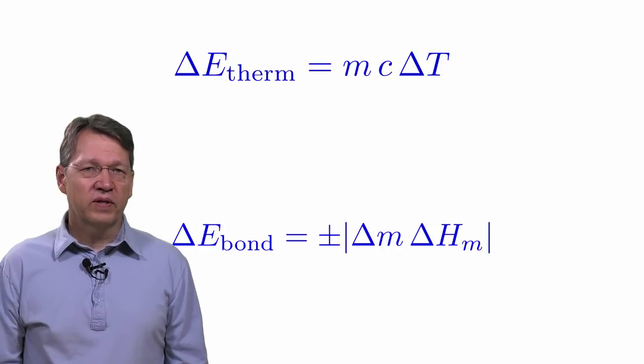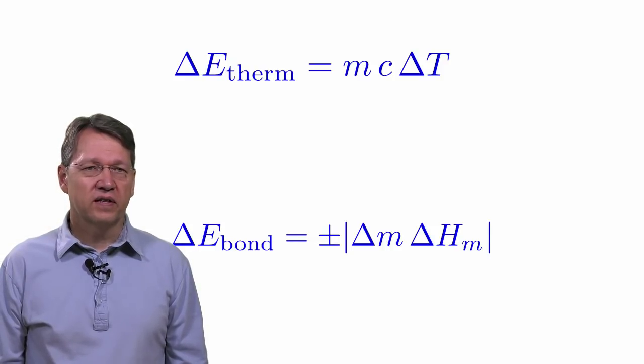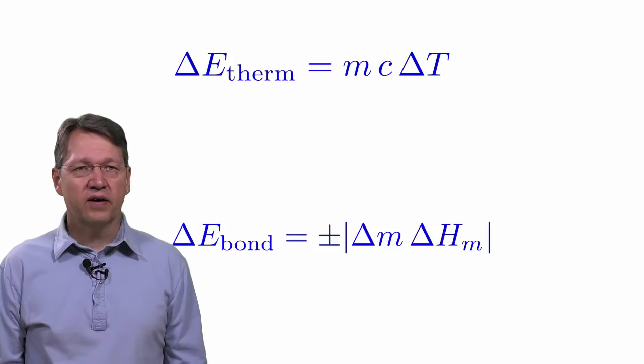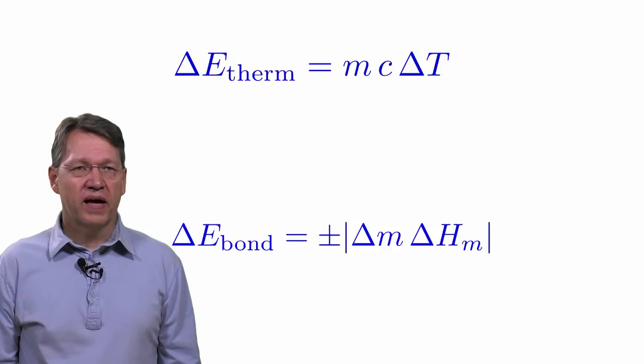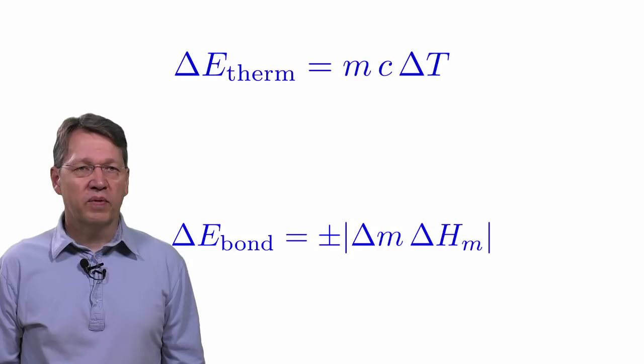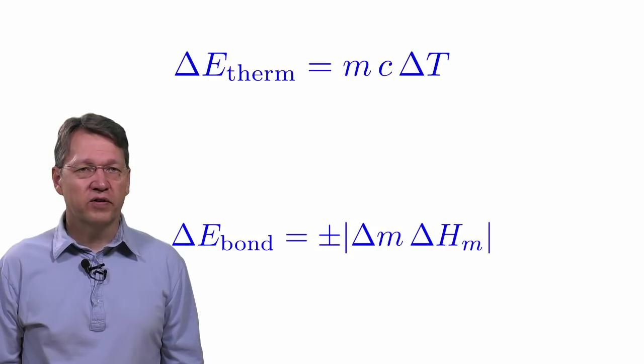When we are going from a low temperature phase to a high temperature phase like solid to liquid, we are adding energy to break bonds, so the bond energy is going up. Similarly, for chemical reactions, when we add energy to break chemical bonds, the bond energy goes up. And when new bonds are formed, bond energy goes down.